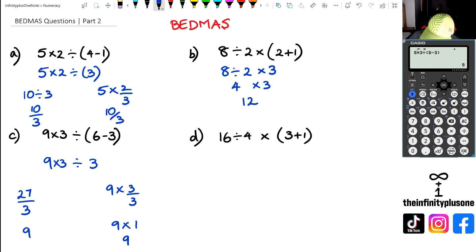So 16 divided by 4, I'm going to leave it as it is for now. But I'm going to do the brackets first. So 3 plus 1 is 4. Now 16 divided by 4 is 4, and then I've got 4 times 4 is equal to 16. So let's try that. We've got 16 divided by 4 multiplied by 3 plus 1, equals 16.